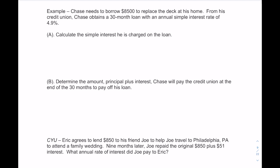Let's work through an example. Chase needs to borrow $8,500 to replace the deck at his home. From his credit union, Chase obtains a 30-month loan with an annual simple interest rate of 4.9%. We need to calculate the simple interest charged on the loan, then determine the total amount — principal plus interest — Chase will pay at the end of 30 months.